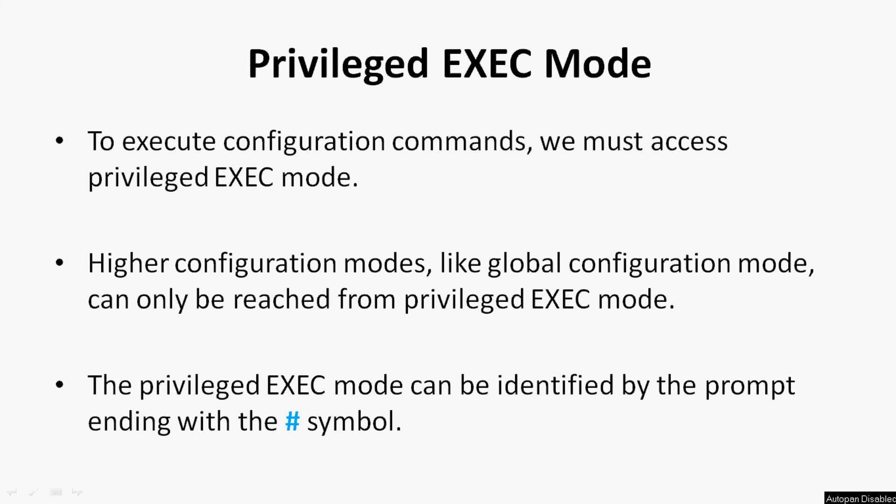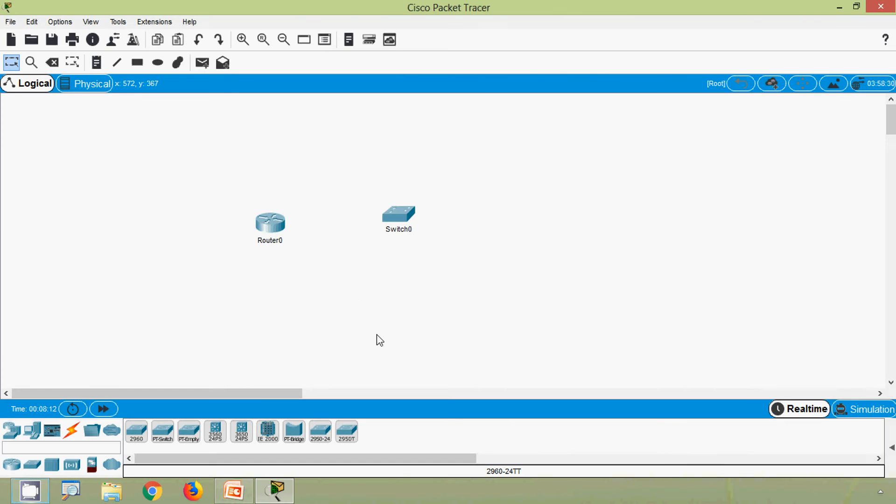Now we will go to privileged EXEC mode. To execute configuration commands, we must access privileged EXEC mode. Higher configuration modes like global configuration mode can only be reached from privileged EXEC mode. The privileged EXEC mode is identified by the prompt ending with the hash symbol.